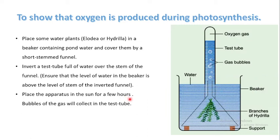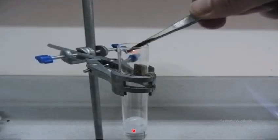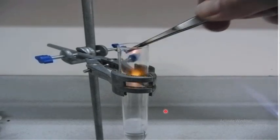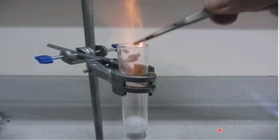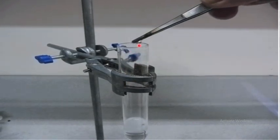Place the apparatus in the sun for a few hours. Bubbles of gas will arise and collect in the test tube, pushing the water down. To test the gas, bring a glowing splinter close to the test tube — the splinter bursts into flame, confirming the presence of oxygen. This shows that oxygen is produced as a product during photosynthesis.